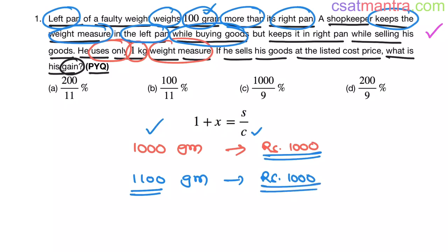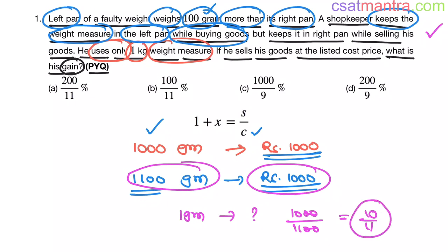Now he bought 1100 grams for 1000 rupees, then 1 gram for how many rupees? That is 1000 by 1100, that is 10 by 11. So this is the cost price of 1 gram of the goods or products he bought.